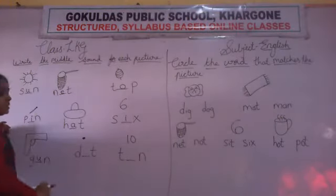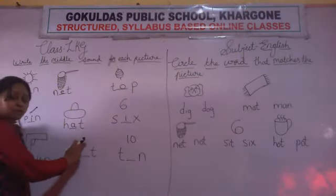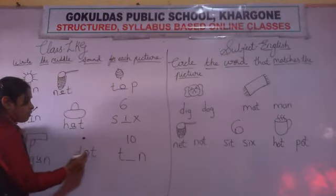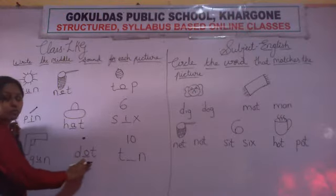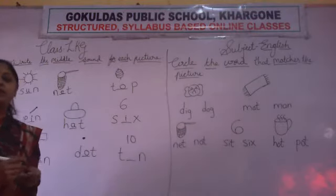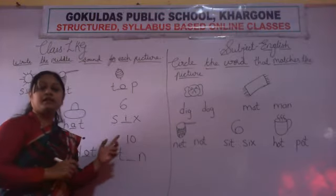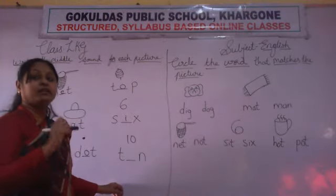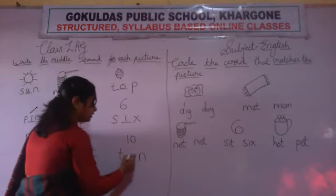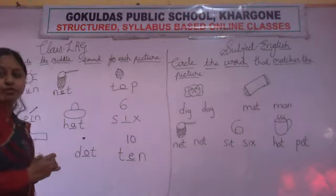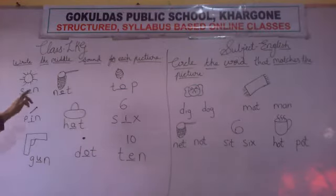Now look here. This is a picture of dot. This is a picture of number 10. T-E-N. Understand what you have to do? You have to write the middle sound of each picture.